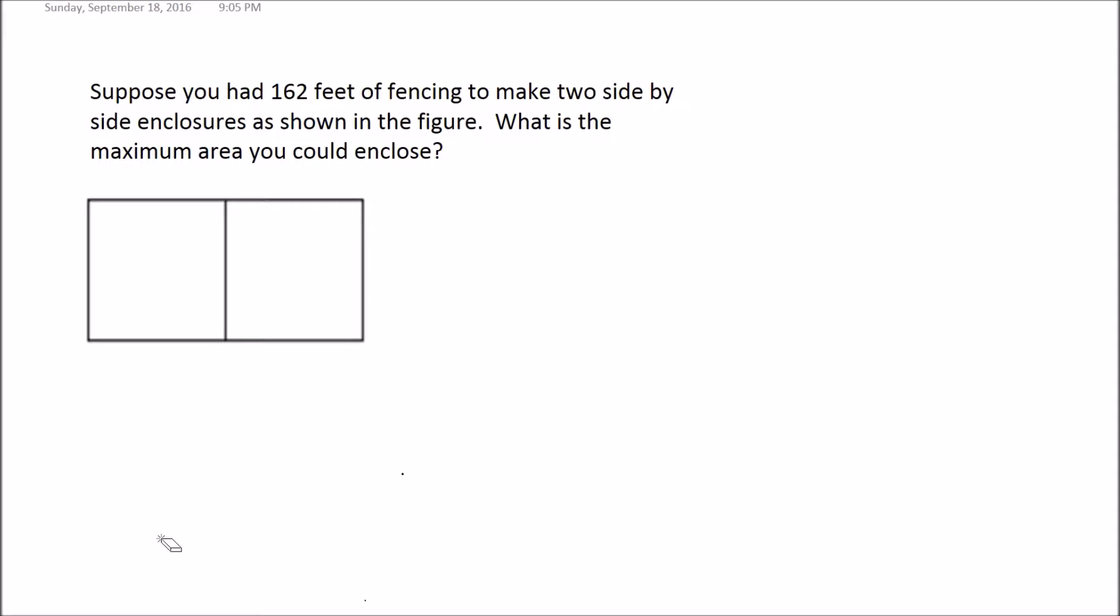I'm going to call this side here X and this side Y. So the perimeter would be all the sides added together. If this bottom here is X, then this top here is X. And if this is Y here, then this side is Y.